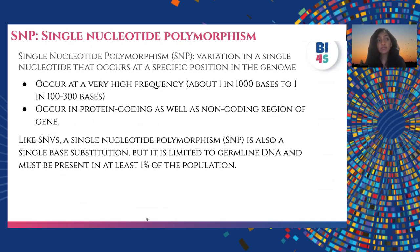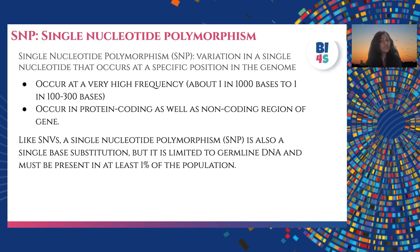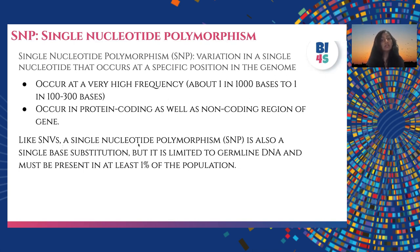SNV stands for single nucleotide variation. A single nucleotide polymorphism (SNP) is a variation in a nucleotide sequence that occurs at a specific position in the genome, at a high frequency of about one in 1,000 to one in 300 bases. It occurs in both protein-coding and non-coding regions. An SNP is also a single base substitution, but it is limited to germline DNA and must be present in at least 1% of the population to be called an SNP.